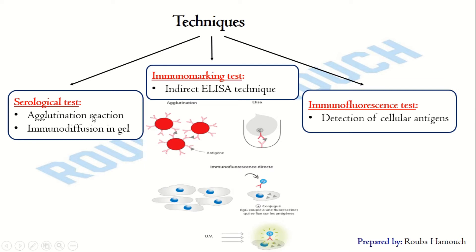Agglutination reaction can be used to detect cellular antigens such as the agglutinogens found on the surface of red blood cells, and can also be used to detect microbial antigens — antigens expressed on the surface of some bacteria.